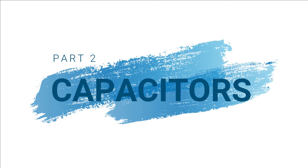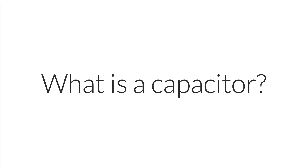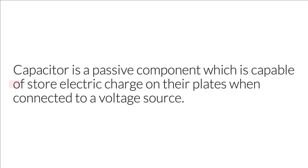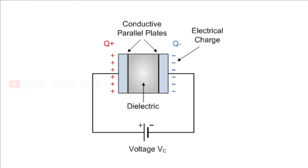Welcome back to another video. In this video we are going through what is a capacitor, how it works, different types, and some basics. A capacitor is a passive component which is capable of storing electric charge on its plates when connected to a voltage source. Capacitors are one of the most useful components in electronic circuits, and that's why we find them in every circuit board.